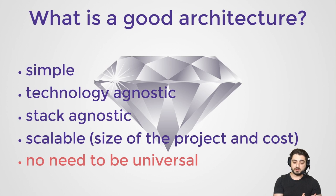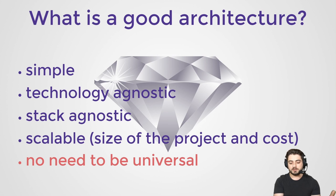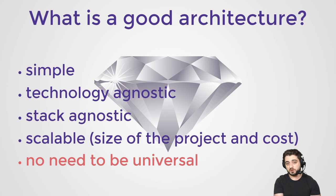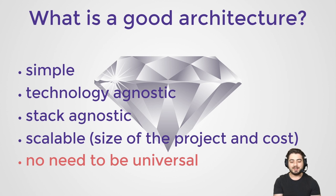What is a good architecture? I think it should be simple — if it wasn't simple, people just wouldn't apply it or learn it. It should be technology-agnostic, so it would be useless if it only worked for Scala. It should also be stack-agnostic, so this is not about functional programming or any specific pattern. It should be scalable. And I have one point in red: no need to be universal. With the diamond architecture, you could build pretty much any kind of app, unless it's something like game development, library development, or embedded systems.